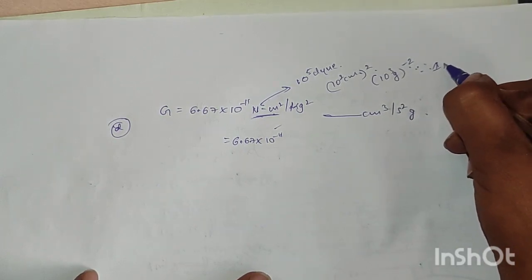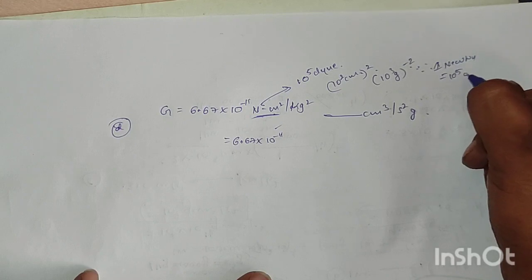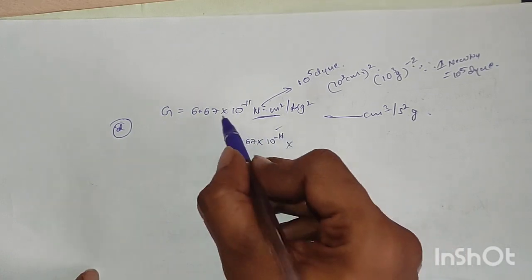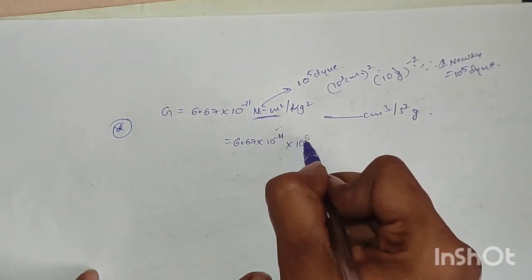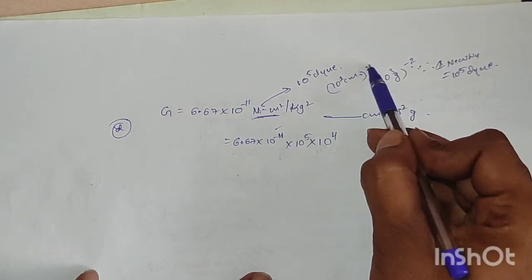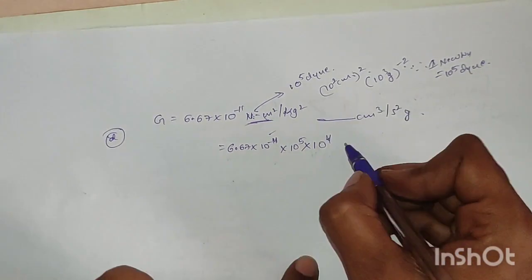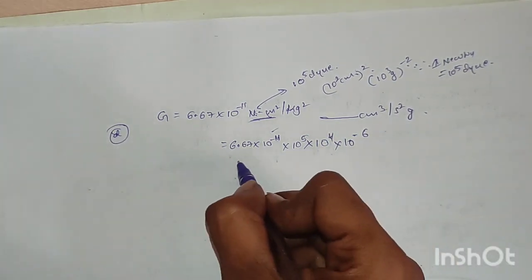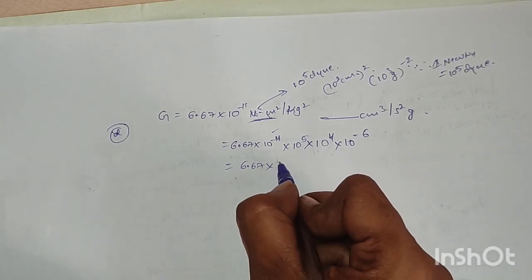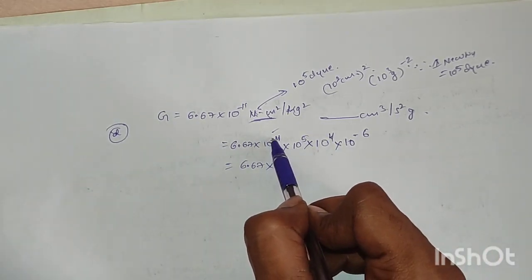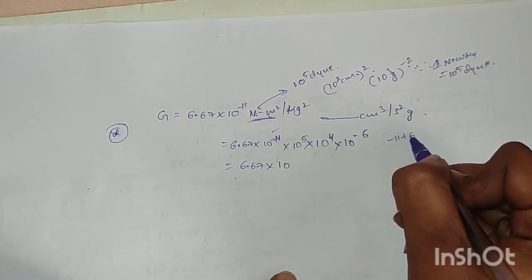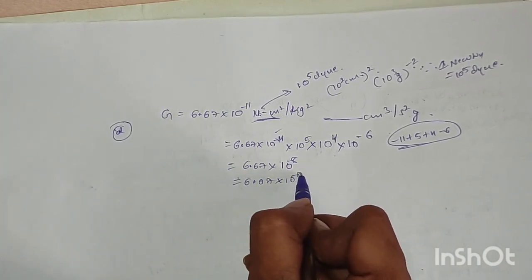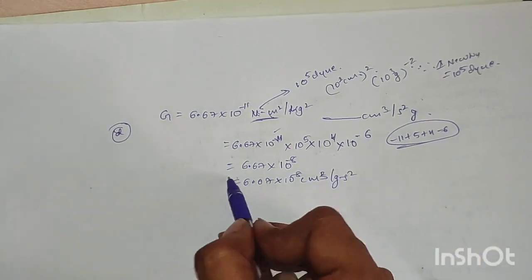So we have 6.67 into 10 to the power of minus 11, with 1 Newton = 10⁵ dynes, meter squared converted to centimeter squared gives 10⁴, and kg squared in denominator gives 10 to the power of minus 6. Combining exponents: minus 11 plus 5 plus 4 minus 6 equals minus 8. Final answer: 6.67 into 10 to the power of minus 8 centimeter³·gram⁻¹·second⁻².